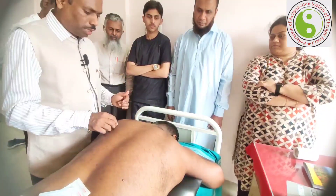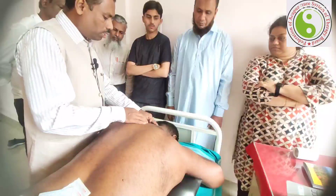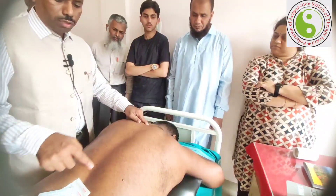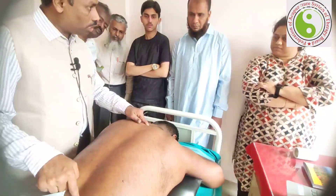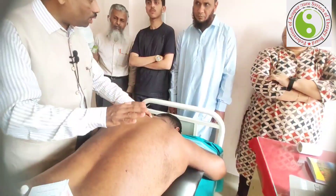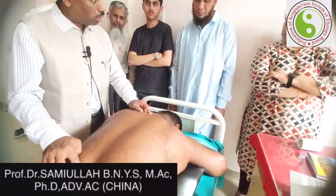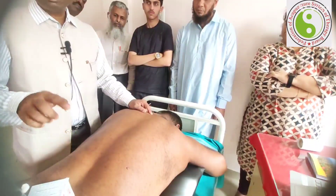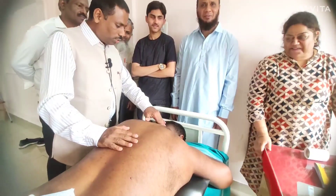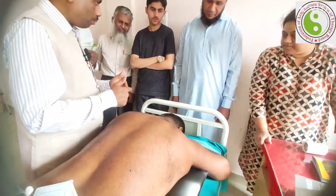Based on that perspective, we would like to understand that Huato Jiaji points were identified from the T1 to L5 level. Totally he identified 17 acupuncture points on one side and 17 on the other side, collectively making 34 acupuncture points.